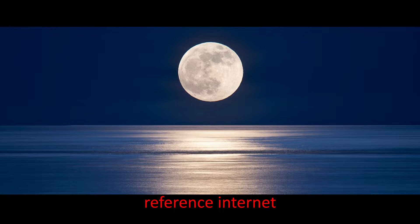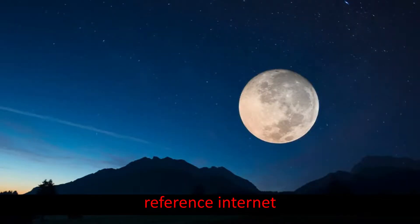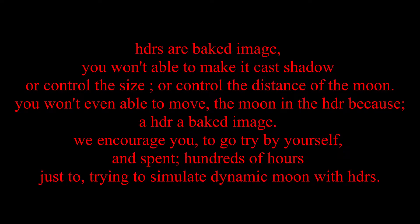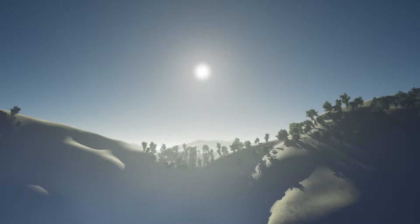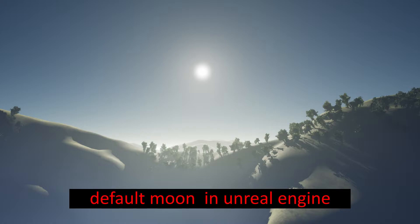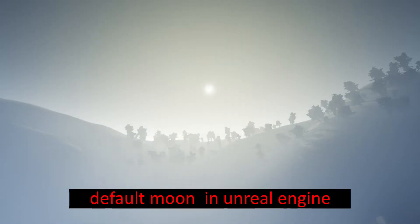The moon. By default, Unreal Engine doesn't have any feature to render the moon in your scene. You can bring an HDR, but you won't be able to make it cast shadow, or control the size or distance of the moon. You won't even be able to move the moon in the HDR because it's a baked image. You can also bring another directional light actor into the scene, but it won't show you any moon at all. Once again, the color of the scene is washed out — it will only show you a point beam of light. Now you need to ask yourself: are you happy with these limitations?